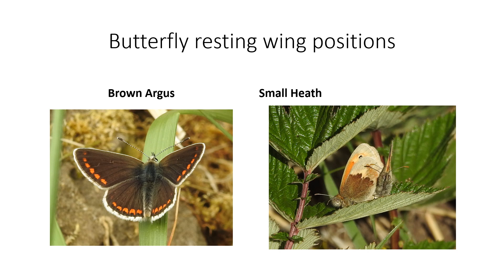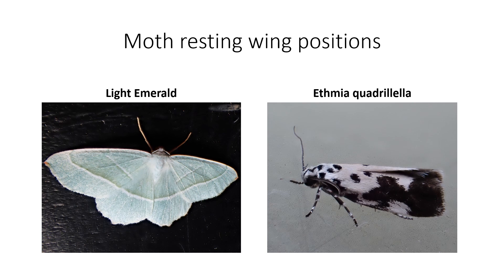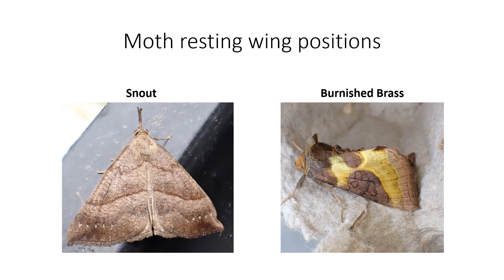Butterflies have mainly two resting positions: wings flat out, or wings up like the small heath. I've never seen the small heath with its wings flat — it always settles with its wings folded, as does the green hairstreak. There are a couple of photographs here of moth resting positions; this one, Nethemia quadriolella, is in a typical tent form position.